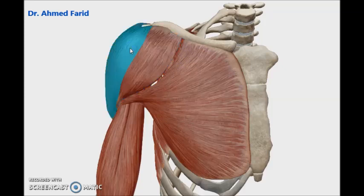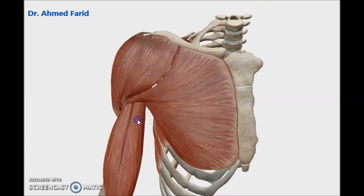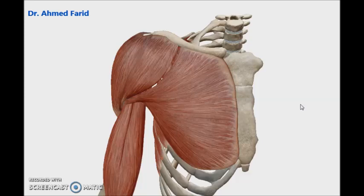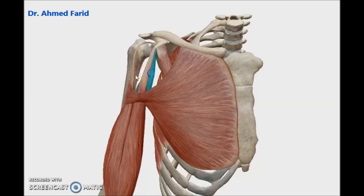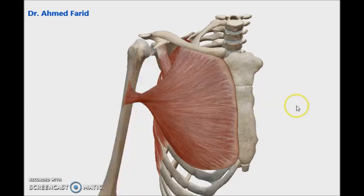There are anterior fibers, middle fibers, and posteriorly posterior fibers of deltoid. At the front of the arm we have coracobrachialis and short head of biceps, and laterally there is the long head of biceps, along with serratus anterior muscle. In order to concentrate on pectoral region muscles, we will now hide all other muscles — deltoid, coracobrachialis with short head of biceps, and long head of biceps.